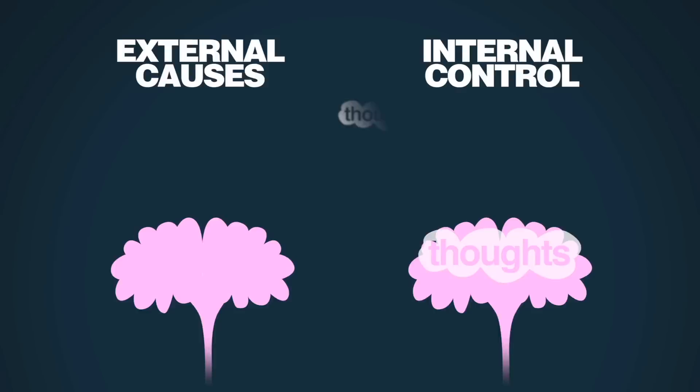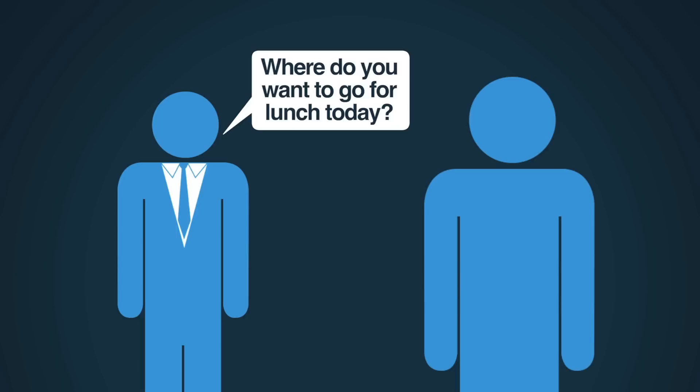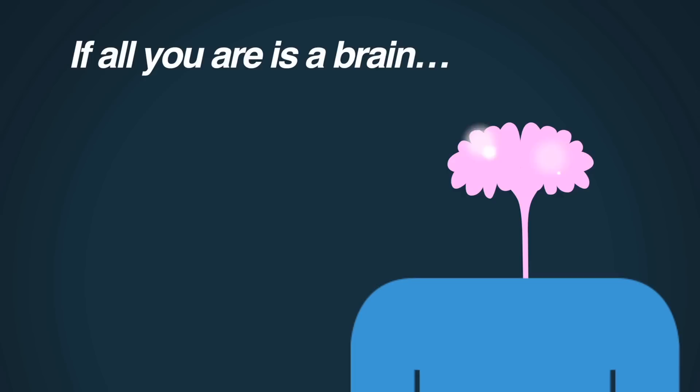Now, let's stay with our lunch example for a second. Back to the question. I ask you, where do you want to go for lunch today? Now, if all you are is a brain, an exhaustively physical system of neurons and synapses, then there's no you that's going to be making a choice at all.